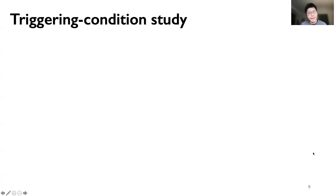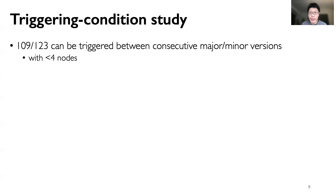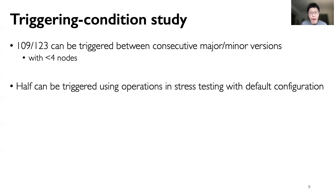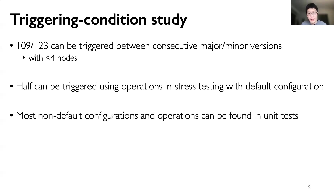We further studied upgrade failure triggering conditions to understand how testing can be improved. We found that almost 90% of upgrade failures can be triggered between consecutive major and minor versions, and they only need fewer than four nodes to be triggered. We also found that half of upgrade failures can be triggered using regular operations in stress testing with only default configuration. Most non-default configurations and non-regular operations can be found in unit tests.